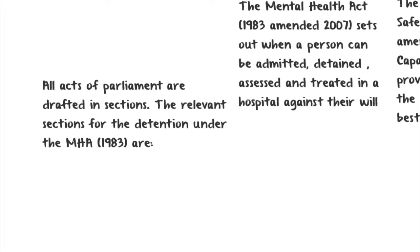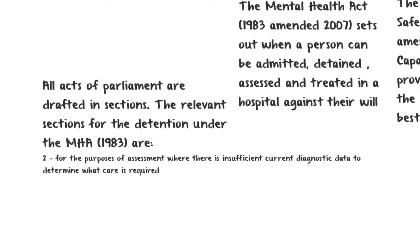We talk about 'sectioning' in the Mental Health Act. All Acts of Parliament are written in sections — there are four sections of the Mental Health Act which specifically describe the conditions and circumstances under which we can deprive somebody of their liberty. Section 2 allows deprivation of liberty for the purposes of assessment where there is insufficient current diagnostic data to determine what care is required. So if somebody's behaviour is clearly causing them or others to be at risk of harm, the state can take their liberty away just to work out whether there's something that needs to be done — this is purely about assessment and diagnosis.